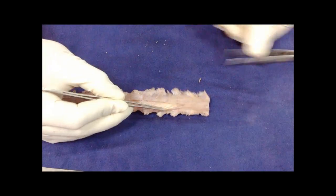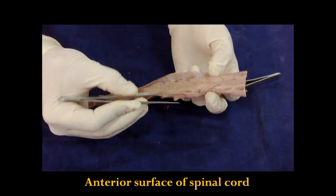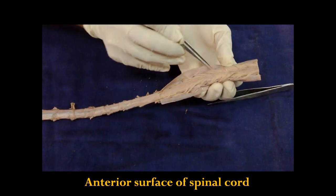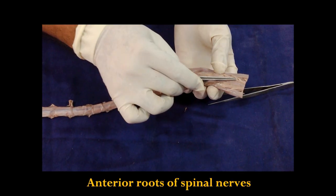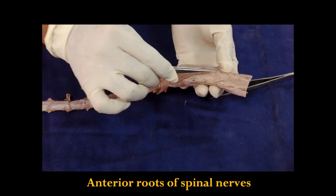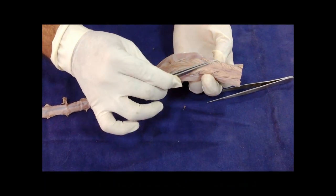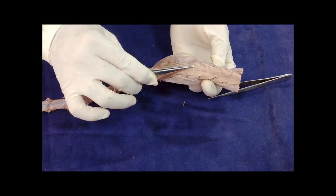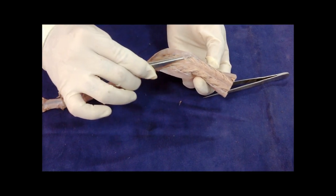And that exposes the anterior surface of the spinal cord. This is the anterior surface of spinal cord. And these are the anterior roots of the spinal nerve. These are motor in function. They also carry autonomic fibers in the thoracic region.